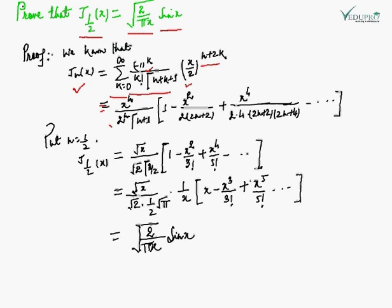So we have J_n(x) = [x^n / (2^n · Γ(n+1))] · [1 - x²/(2·(2n+2)) + x⁴/(2·4·(2n+2)(2n+4)) - ...]. Now since we have to prove J_{1/2}(x), we will replace n with 1/2. Putting n = 1/2, we get J_{1/2}(x).